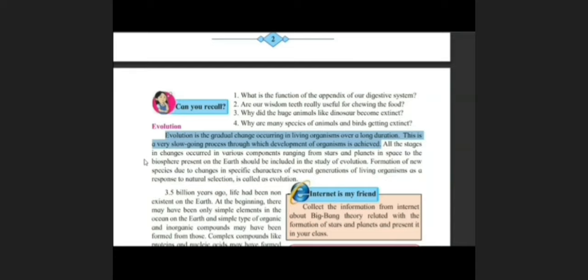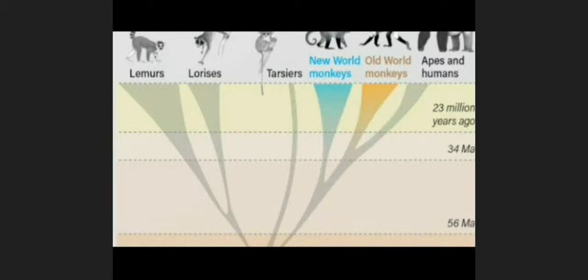For example, we know that we evolved from the ape, that is the lemur. So evolution from that lemur to the Homo sapiens, that is the wise man, up to that, different steps are there. Which steps are there? We know that Ramapithecus is there, after that Dryopithecus.